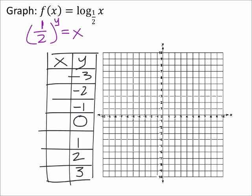So when y is zero, we've got one half to the power of zero, that's one. That's nice. That gives us the point one, zero, which I put on the graph now.